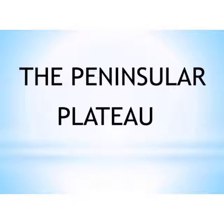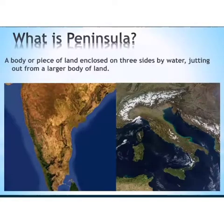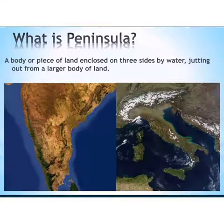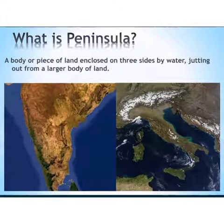Now, what is a Peninsula? A piece of land that is surrounded by water on three sides is called a Peninsula — a body or piece of land enclosed on three sides by water, extending out from a large body of land.